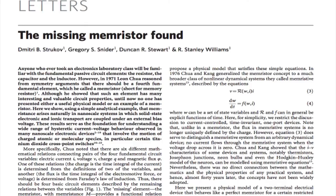We are going to do some exercises. I want you to write down on paper the following structure I described: introduction, background, problem, result, implication to the area, and a broad societal implication. This is an abstract from Nature — the same guidelines that we saw. I want you to read each sentence and identify which sentence indicates what.